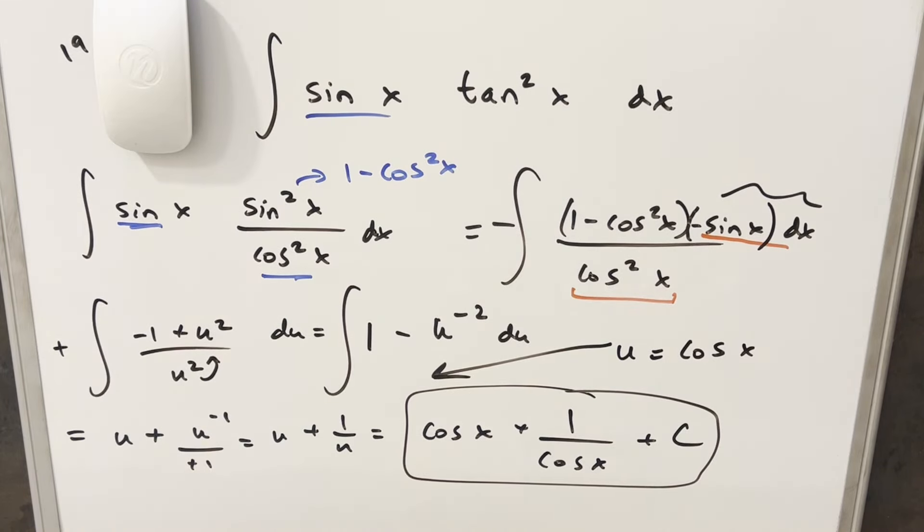We'll go ahead and integrate it. Integral of 1 is going to be u. Integral here is going to be u to the minus 1 over minus 1. Minus 1s are going to cancel here. And so we're left with just u plus 1 over u.